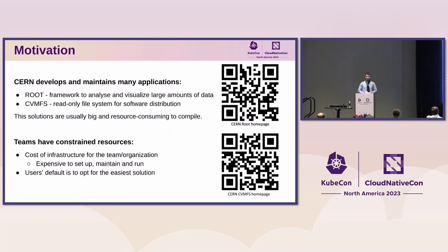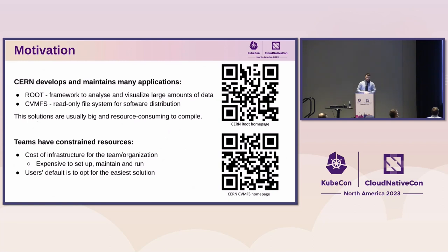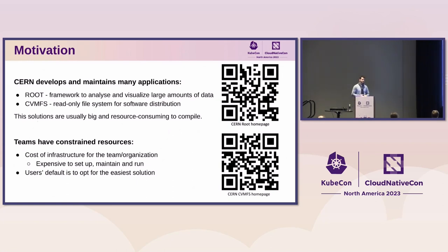At CERN, there are lots of applications managed and contributed to by many teams, small and big. These solutions are sometimes not small and they really take time to compile. The two most common tools are ROOT — a tool scientists use to analyze and visualize the large amounts of data produced by the LHC — and also our own read-only file system for software distribution. This is problematic for a team to manage: it's expensive to set up and maintain in terms of manpower. If you have different teams doing the same thing, you're losing resources, and if resources stay idle, you're losing money.